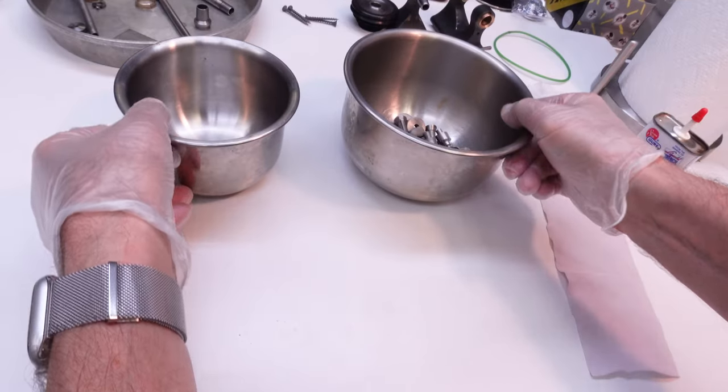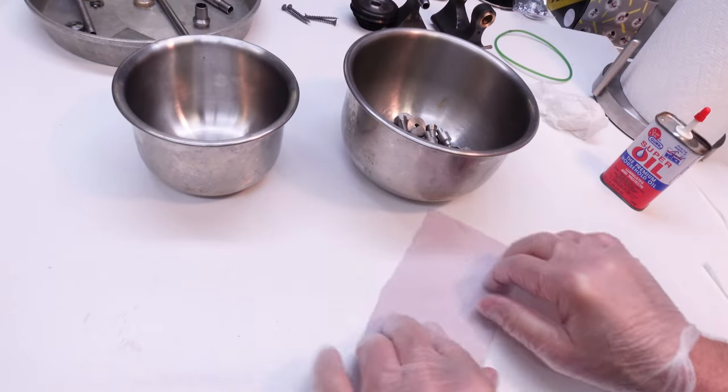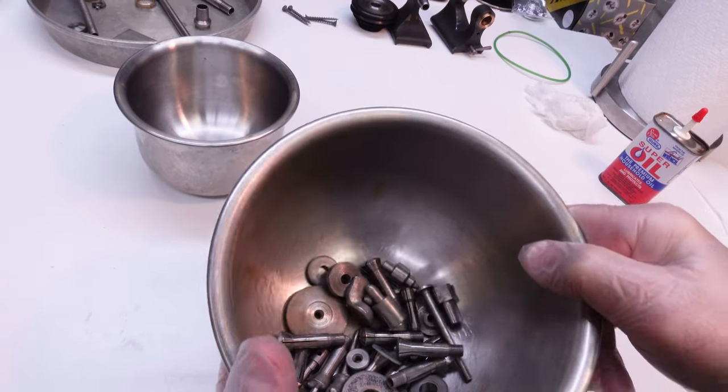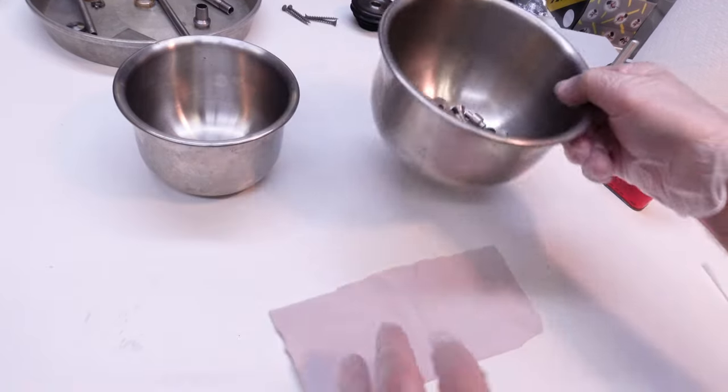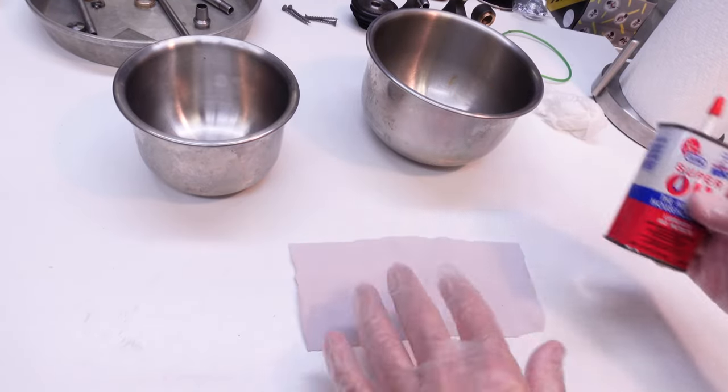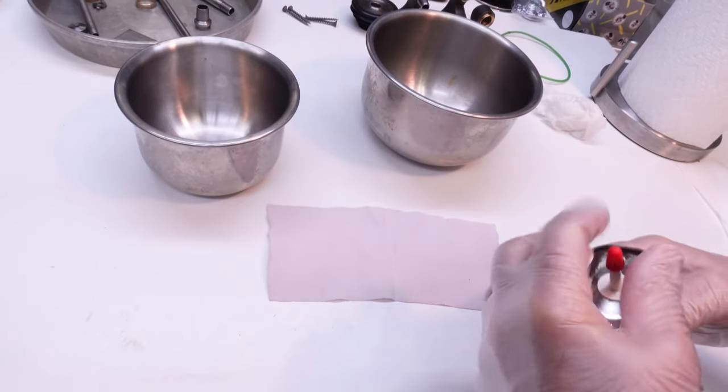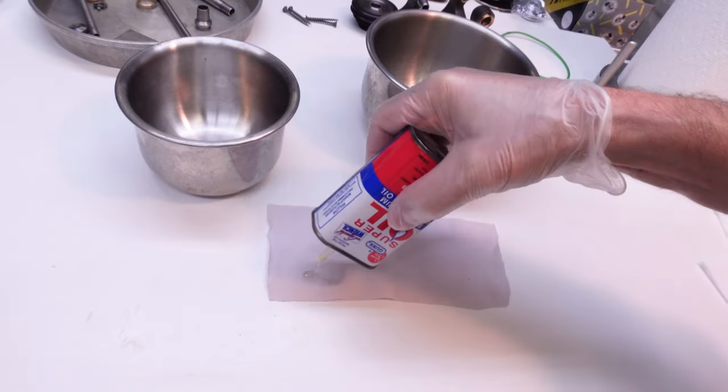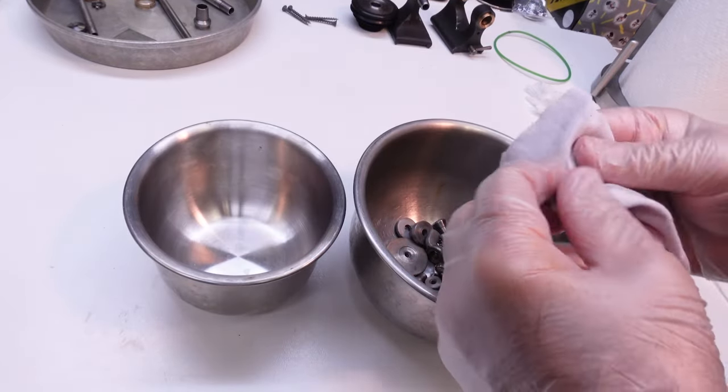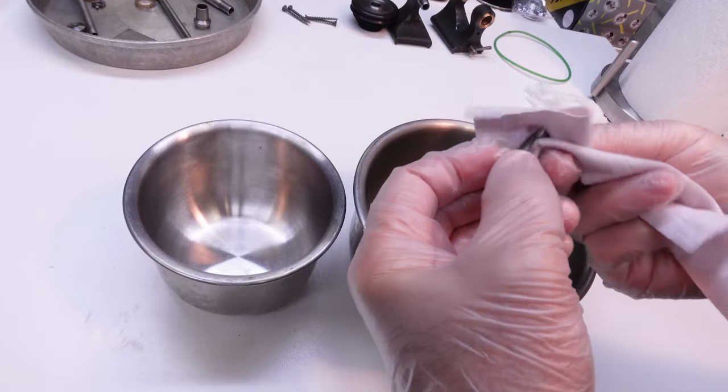There was only one step left before calling it a day. All these parts that I washed, I don't want rust creeping back in. So, I'm going to take some household oil and just do a very, very light coating. I'm just going to go through here, and I just want to very lightly touch everything.